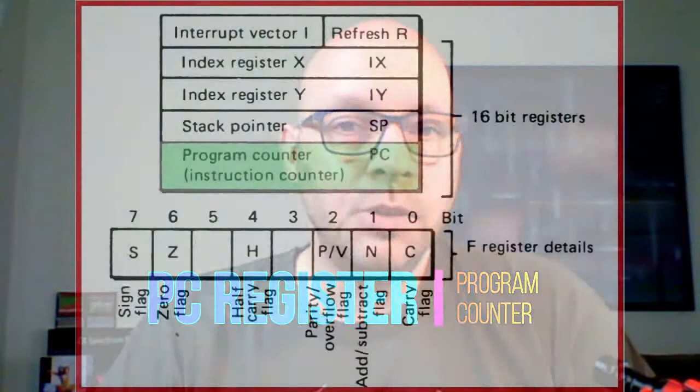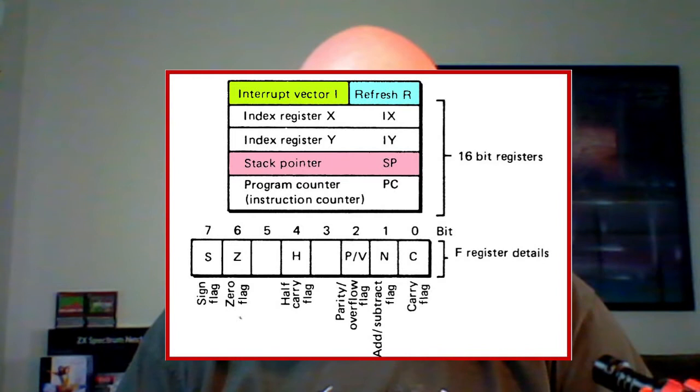The flag register is unique in that we are interested in the individual bits within that register rather than its value as a whole. There are other registers such as the PC register, whose specific function is to store the address in memory of the machine code instruction being executed — the program counter keeps track of those specific memory locations. There is also the interrupt vector register known as the I register, a refresh register labeled R, and a stack pointer register labeled SP.